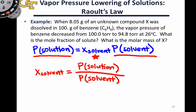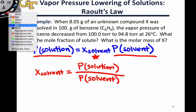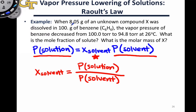So let's see how we can apply this equation in the context of this problem. The problem tells us that 8.05 grams of an unknown compound, which the problem just calls X, was dissolved in 100 grams of benzene, C6H6. The vapor pressure of benzene decreased from 100 torr to 94.8 torr at that temperature.